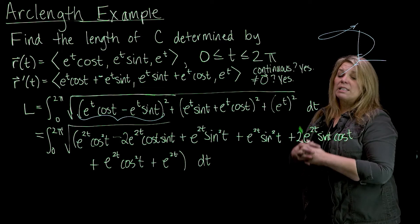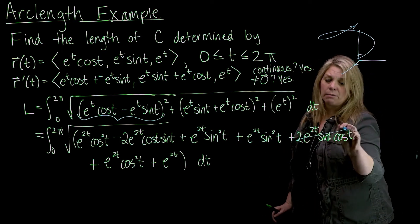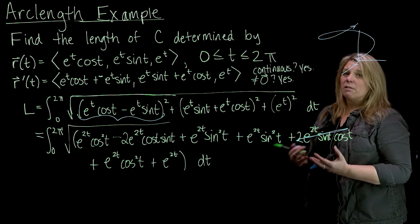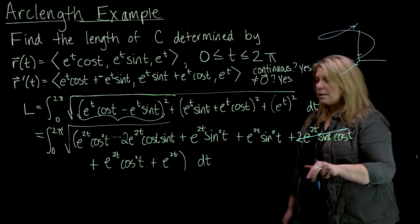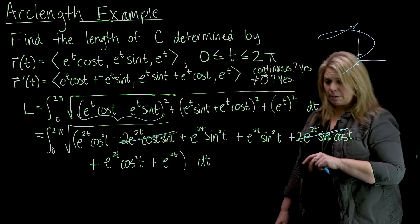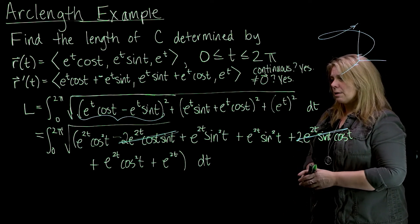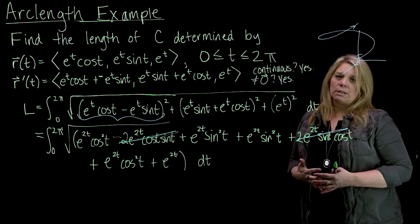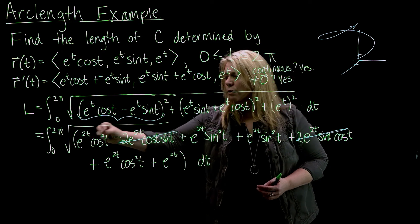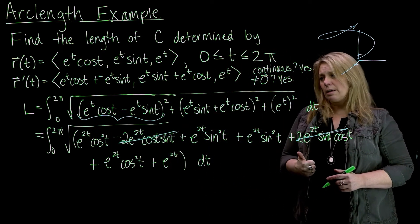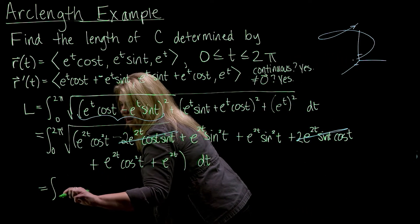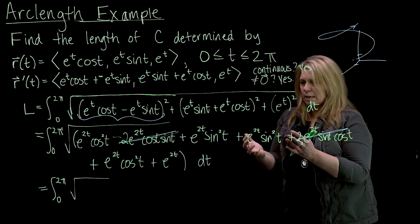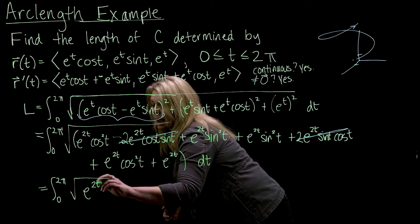Although it looks awful, there's a ton of simplification. The positive and negative cross terms cancel. Then I have e to the 2t cosine squared t plus e to the 2t sine squared t from the first squared term, and the same combination again from the second. Factoring out e to the 2t from each pair gives e to the 2t times (cosine squared t plus sine squared t), which equals just e to the 2t by the Pythagorean identity. So those collapse to e to the 2t each time.